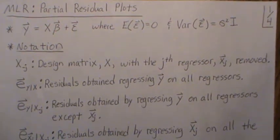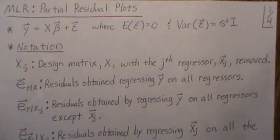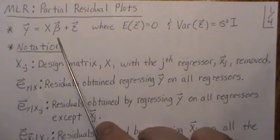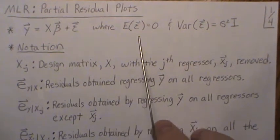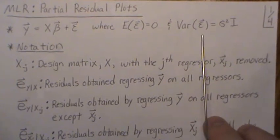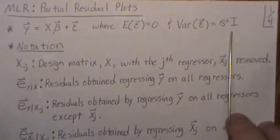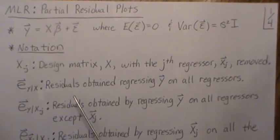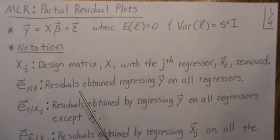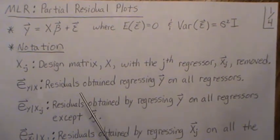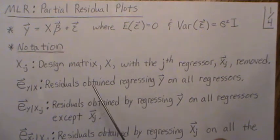In this video, we're in the multiple linear regression setting and we're going to look at partial residual plots. As a reminder, the model is y equals x beta plus some error, and we're assuming that the mean of the error terms is zero and it has a covariance matrix of sigma squared I.